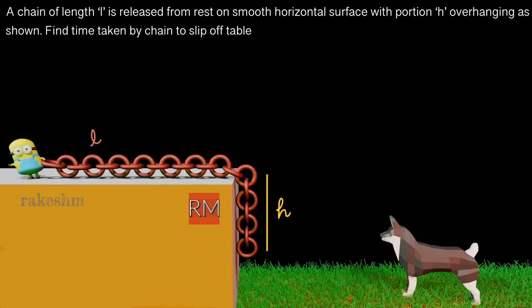We can say that the time for this link to come here — when this link comes here, all of the chain has fallen off the table. So the time for the chain to slip off the table is nothing but the time for this link to come from here to here. Let us have a look at the schematic.